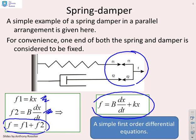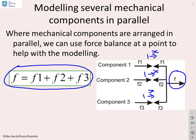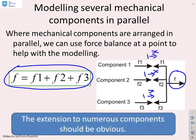What happens then if we add more than two components? If components are arranged in parallel — meaning they all share the same displacement, so they're essentially fixed together — the force applied is divided between those components. With three components, we get F equals F1 plus F2 plus F3. You can extend this to numerous components, but we're going to use this observation to look at mass spring damper systems.